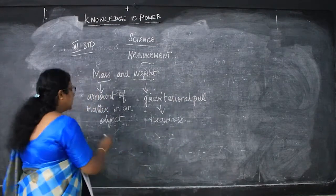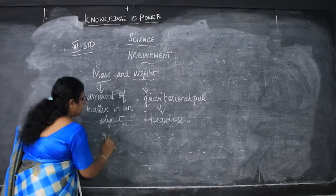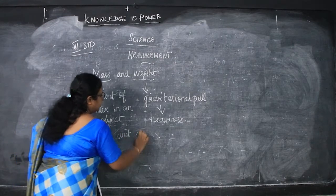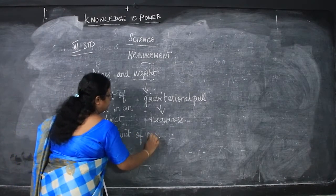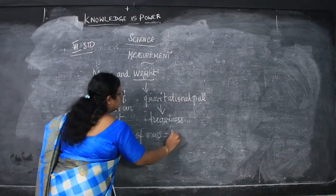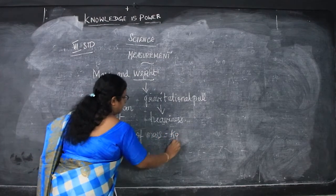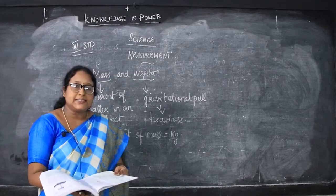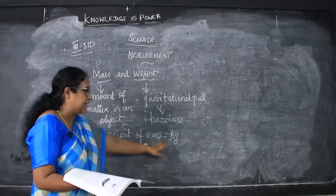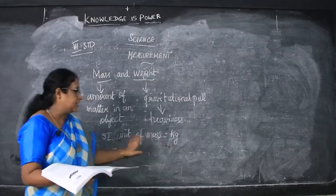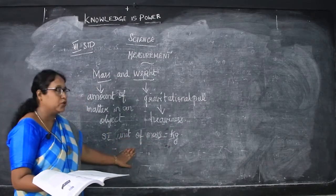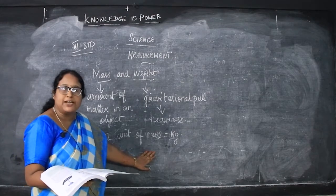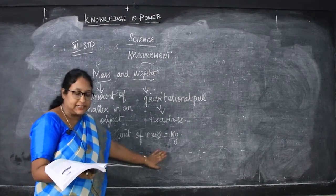We will see the SI unit of mass. The SI unit of mass is kilogram, and it is represented as kg.